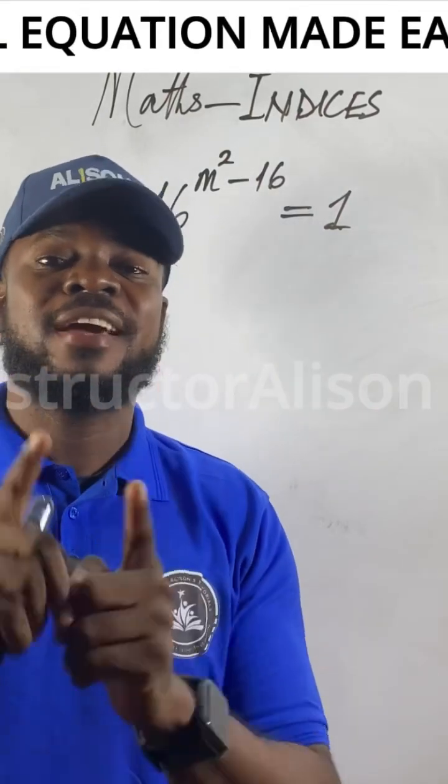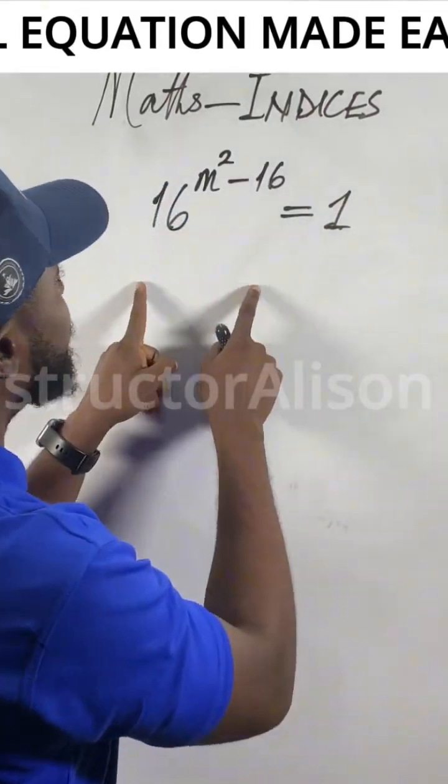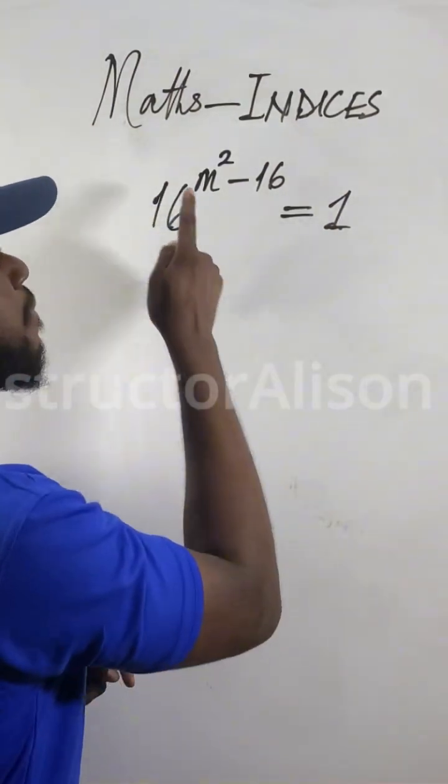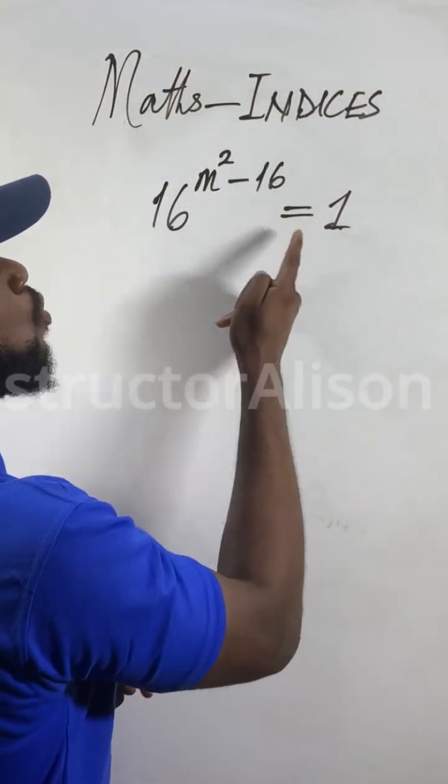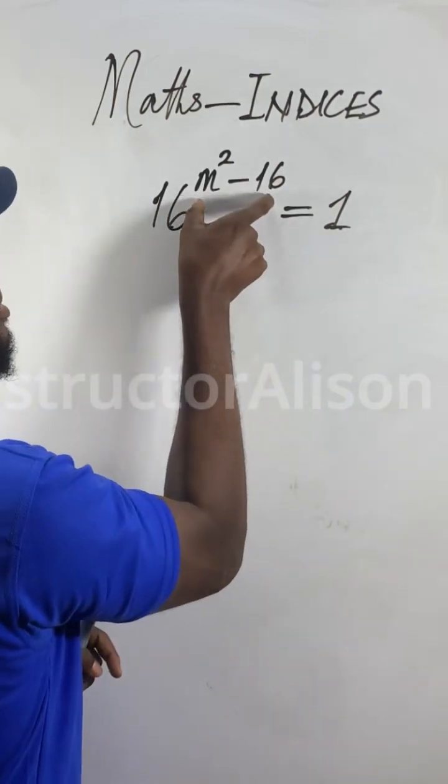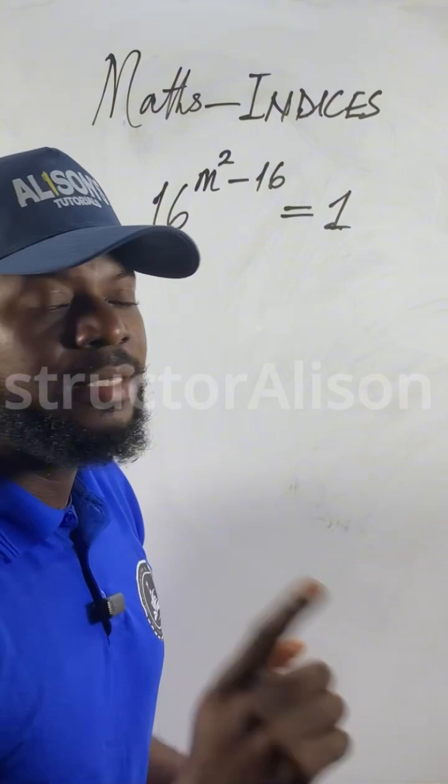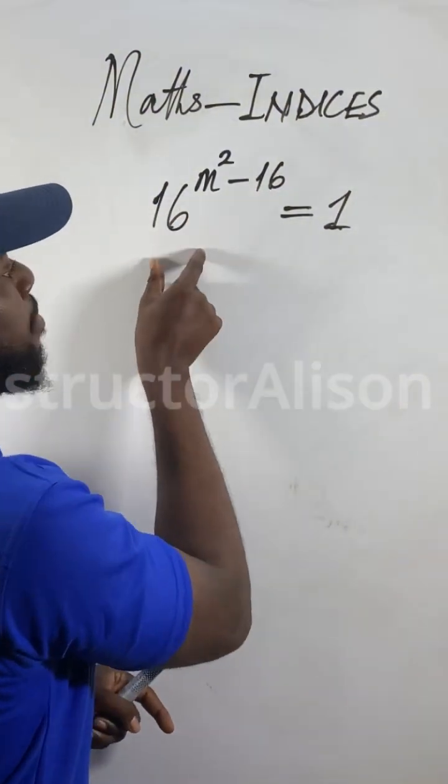Anytime you have an indices equation like this, they say 16 to the power of m squared minus 16 equal to 1. These two have power on top. This particular 16 is the base, this one is the power. This one is the base.